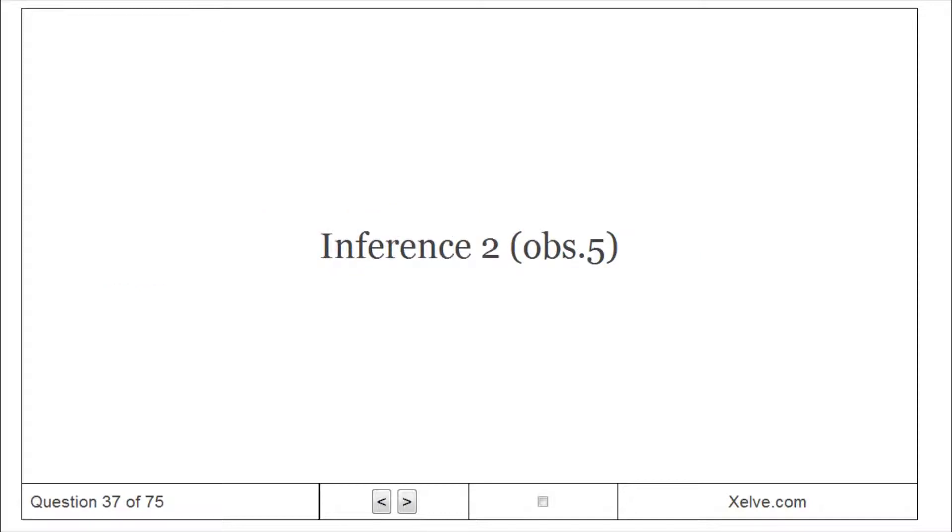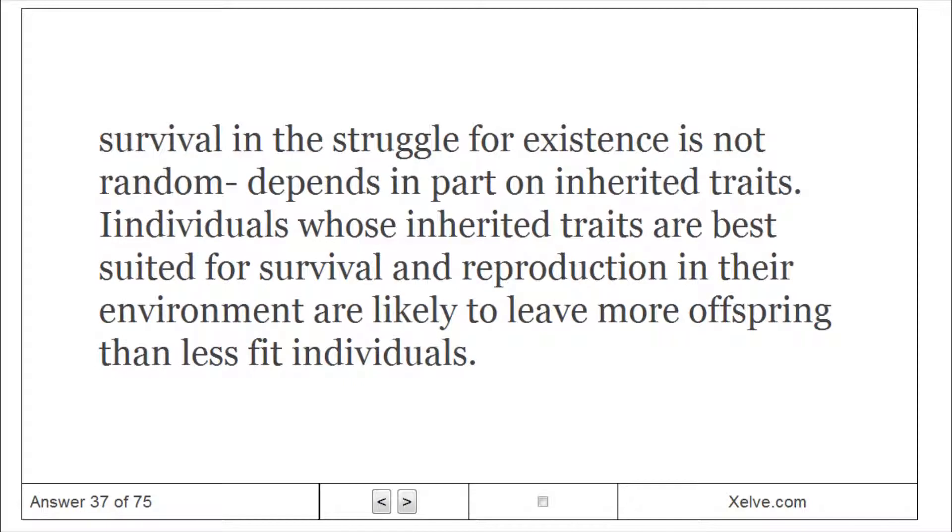Inference 2: Survival in the struggle for existence is not random, depends in part on inherited traits. Individuals whose inherited traits are best suited for survival and reproduction in their environment are likely to leave more offspring than less fit individuals.